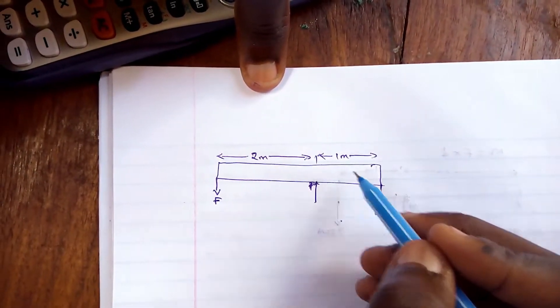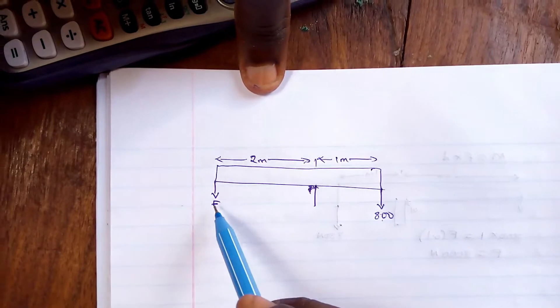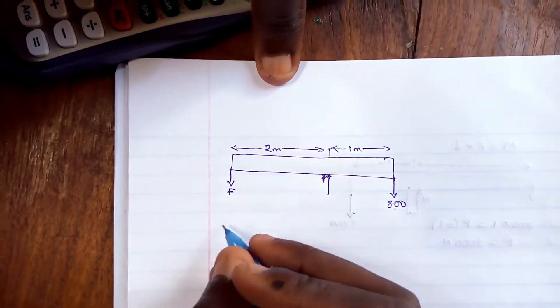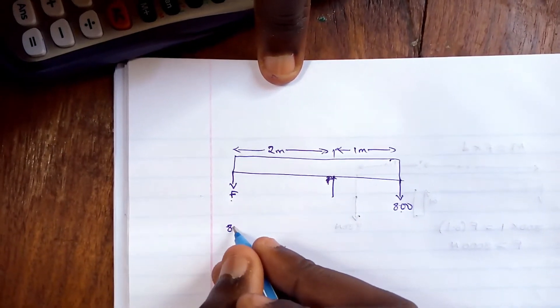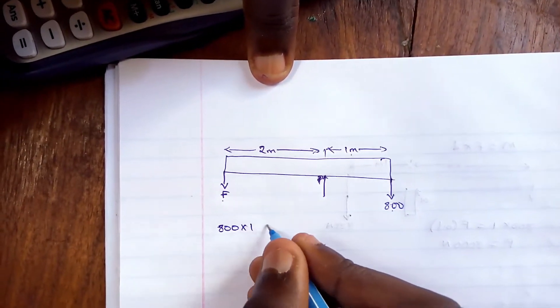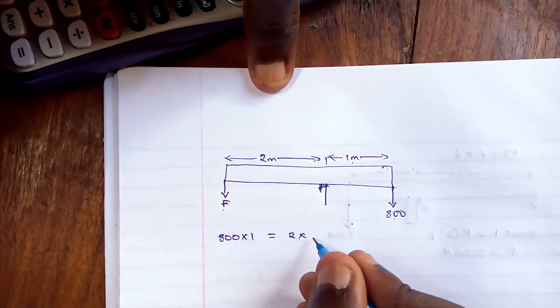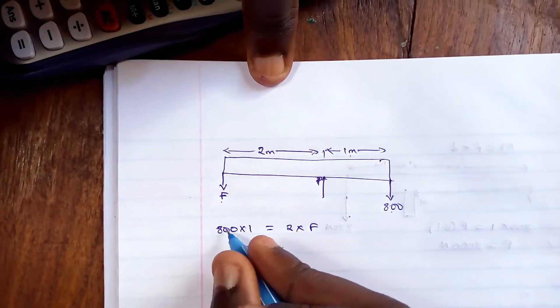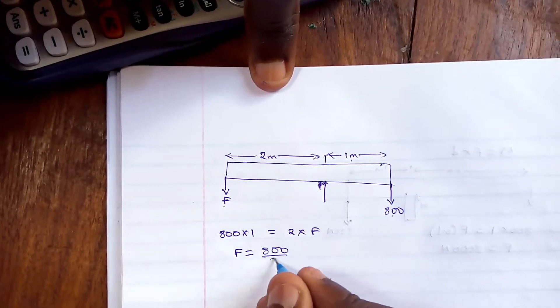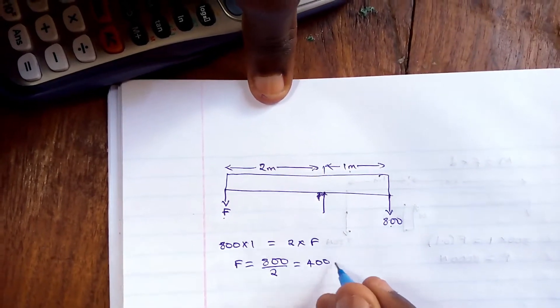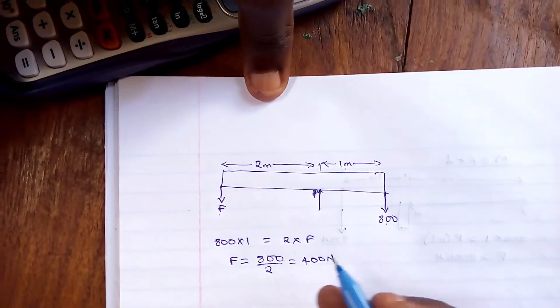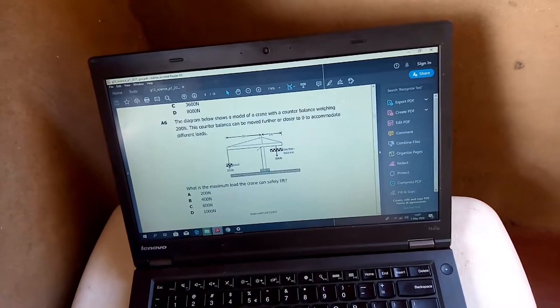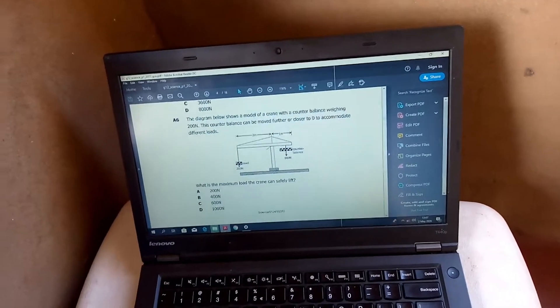So these two moments have to balance - the clockwise moment made by the 800 newtons load and the anticlockwise moment made by the load we are trying to find. So the clockwise moment, 800 times this distance one meter, should be equal to two times this force F. Then F is equal to 800 over 2, which is equal to 400 newtons, which is the answer. In this case it's B.